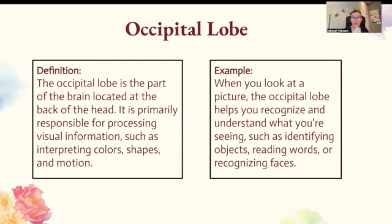Occipital lobe. The occipital lobe is the part of the brain located at the back of the head. It is primarily responsible for processing visual information such as interpreting colors, shapes, and motion. When you look at a picture, the occipital lobe helps you recognize and understand what you're seeing, such as identifying objects, reading words, or recognizing faces.